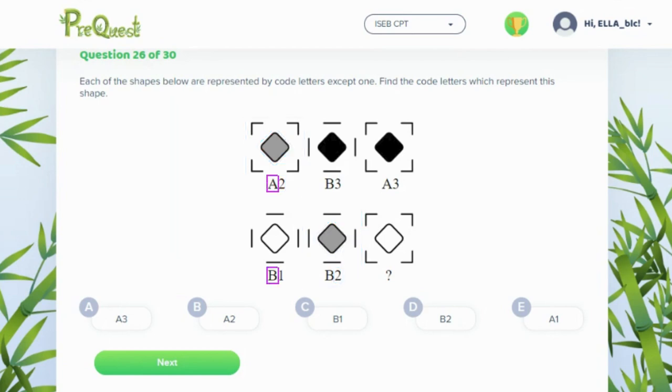Now there's also an A and a B for the first digit. Here we can look at another difference which is the outline of the shape.